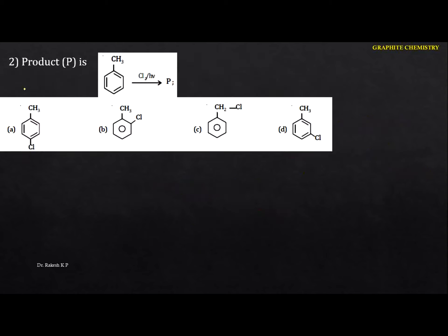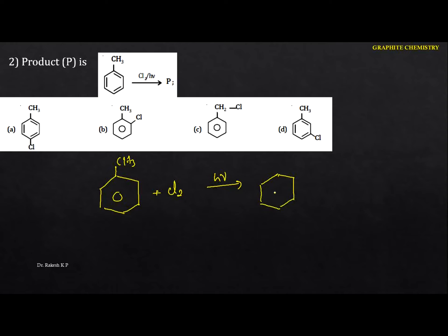Next question: the product P in the reaction of toluene with chlorine. In the presence of diffuse sunlight it undergoes side-chain substitution, not electrophilic substitution. The product is benzyl chloride, and the byproduct is HCl. In this particular option they are giving monosubstitution, so the answer is option C.